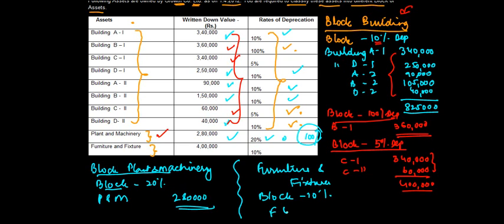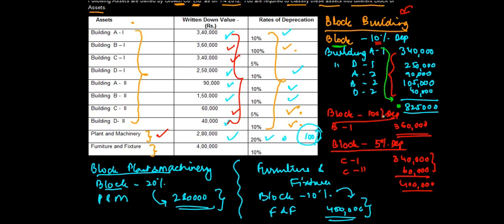For furniture and fixture: block — 10% depreciation — value ₹4,00,000. The significance of this classification is that I now apply 20% depreciation precisely on the plant and machinery block value, 10% on the furniture and fixture block, and for buildings: 10% on ₹8,25,000, 100% on ₹3,60,000, and 5% on ₹4,00,000. This helps in calculating depreciation precisely. And with that, we come to an end of this question.